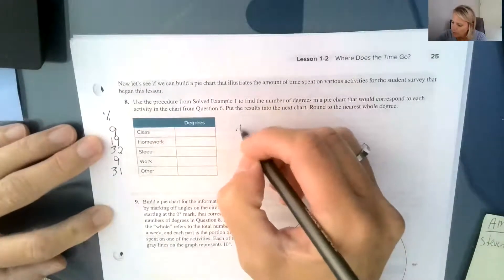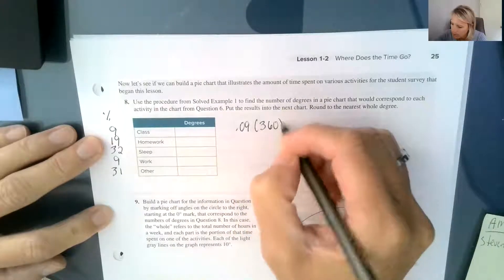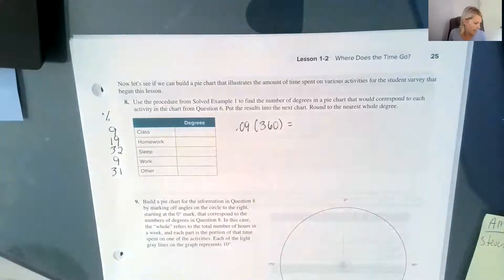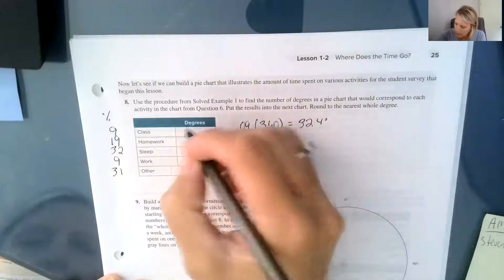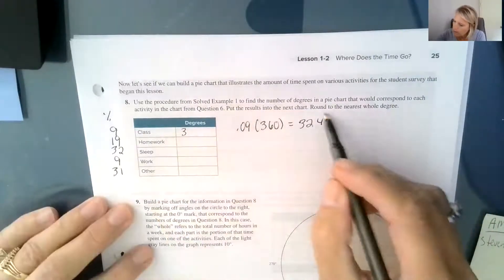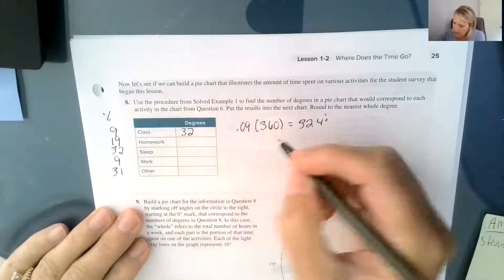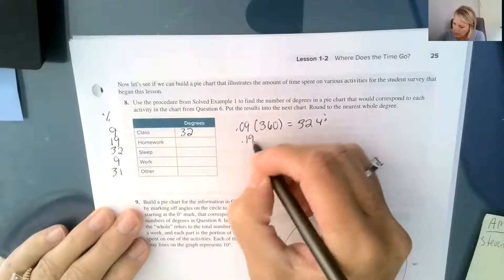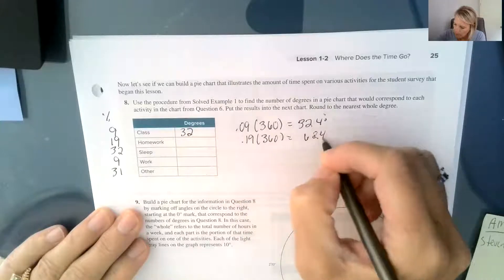So for class, 9% would be 9% of 360 or 0.09 times 360. And that comes out to be 32.4 degrees. But it does say round to the nearest whole degrees, so we're going to round that to 32. And then the next one is going to be 0.19 times 360. And that comes out to be 68.4.